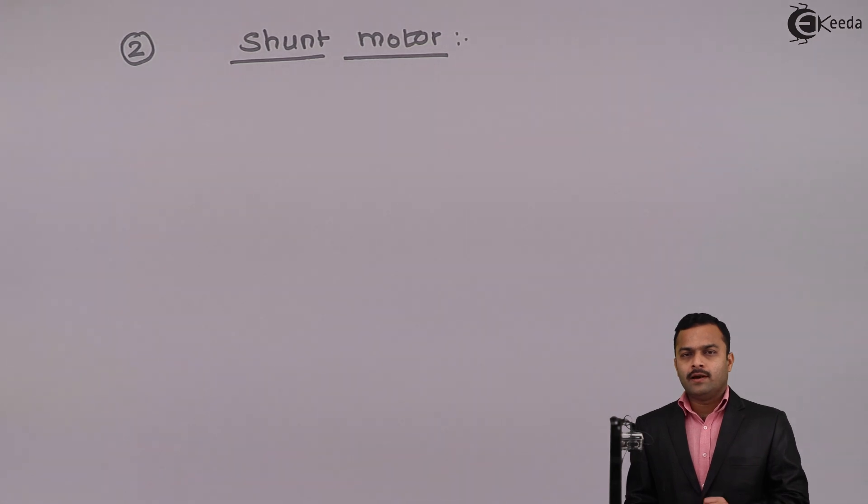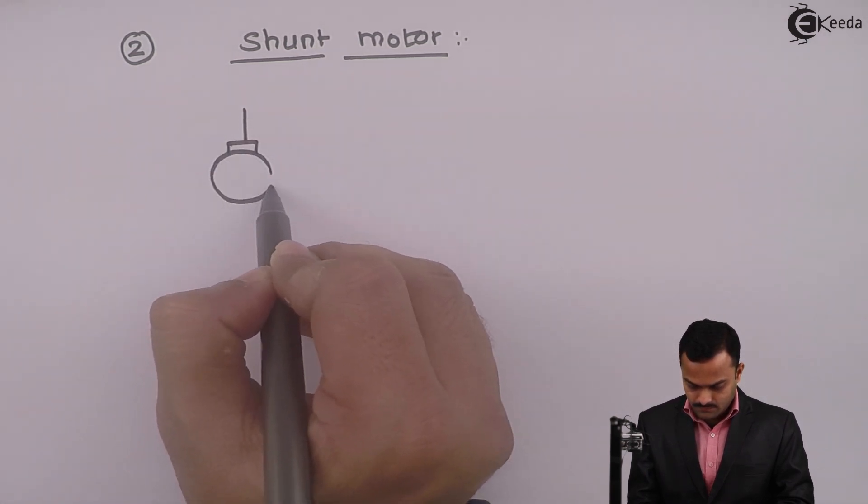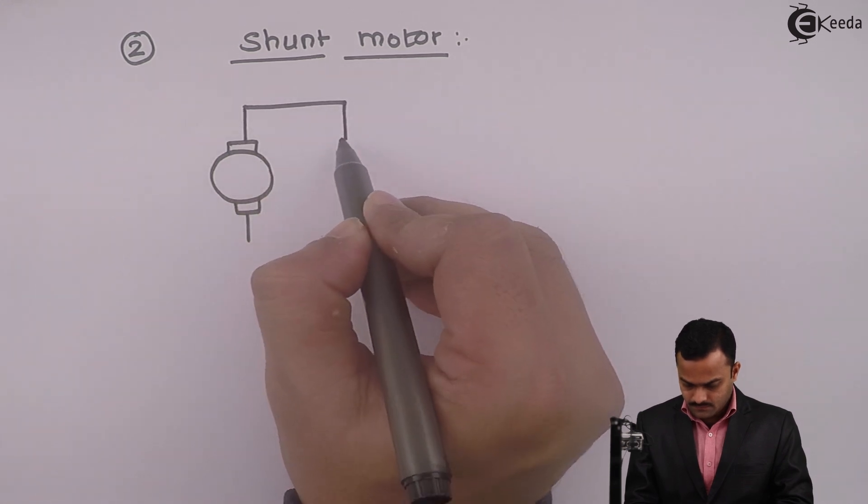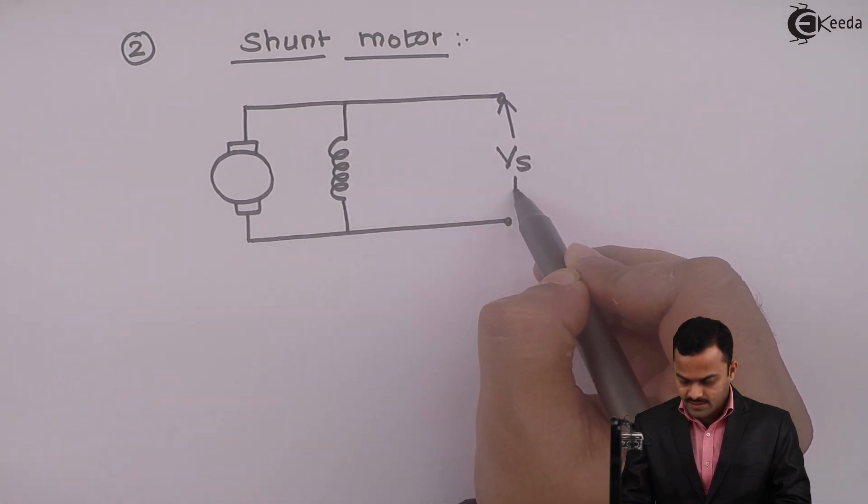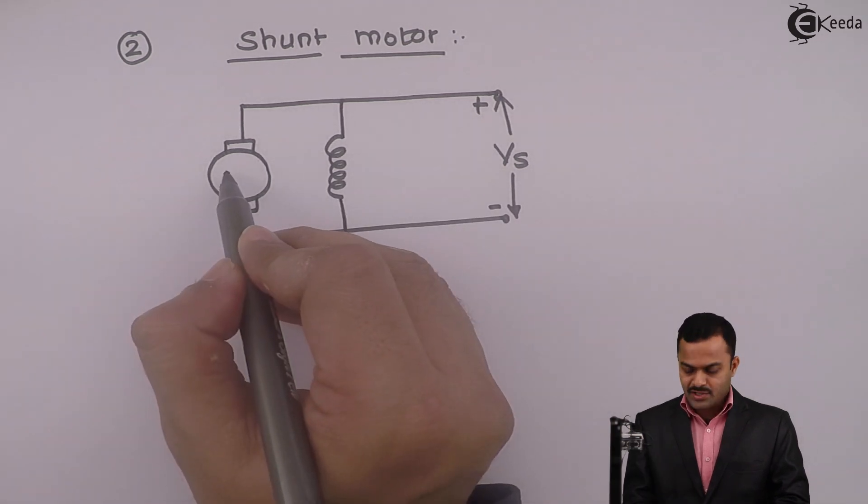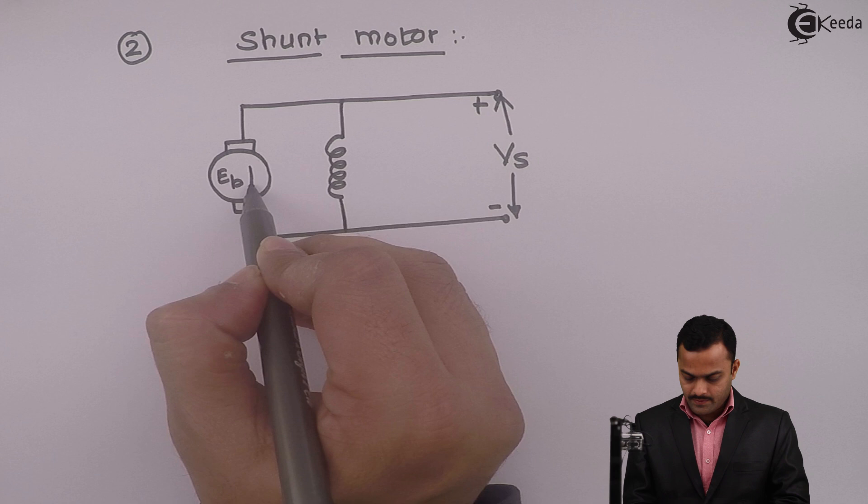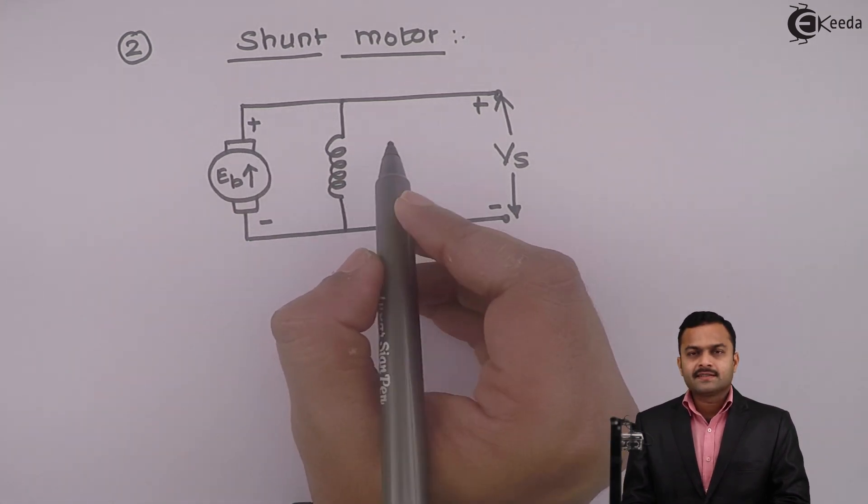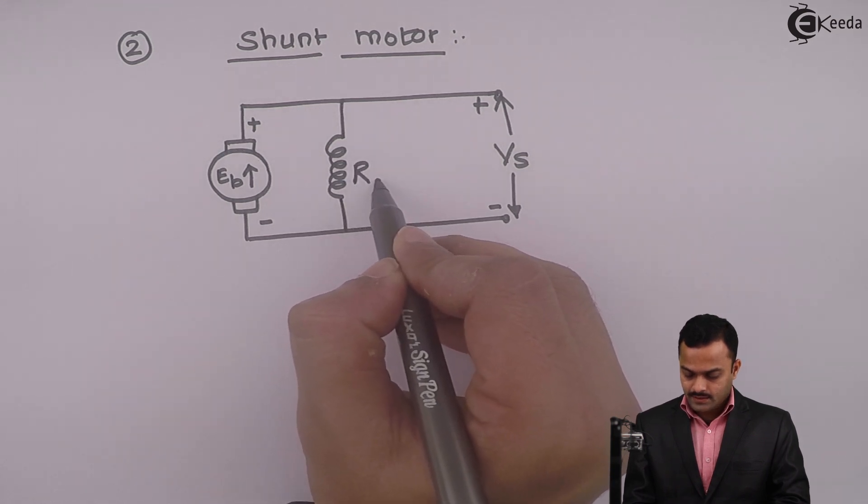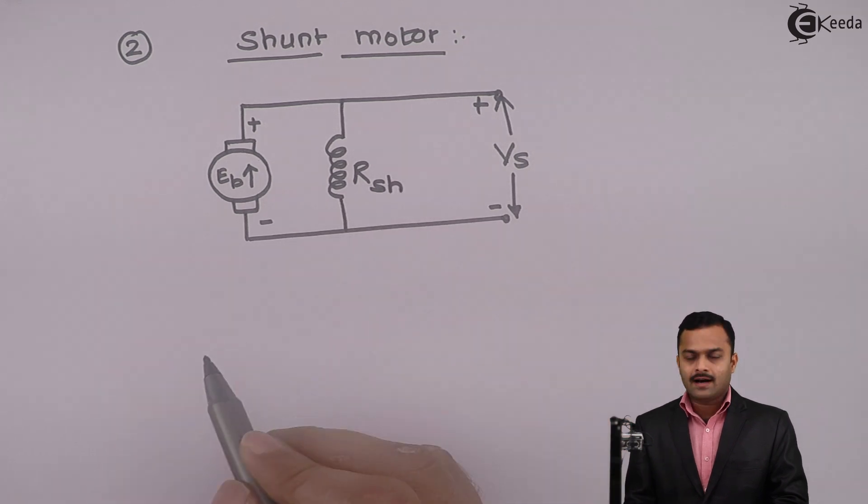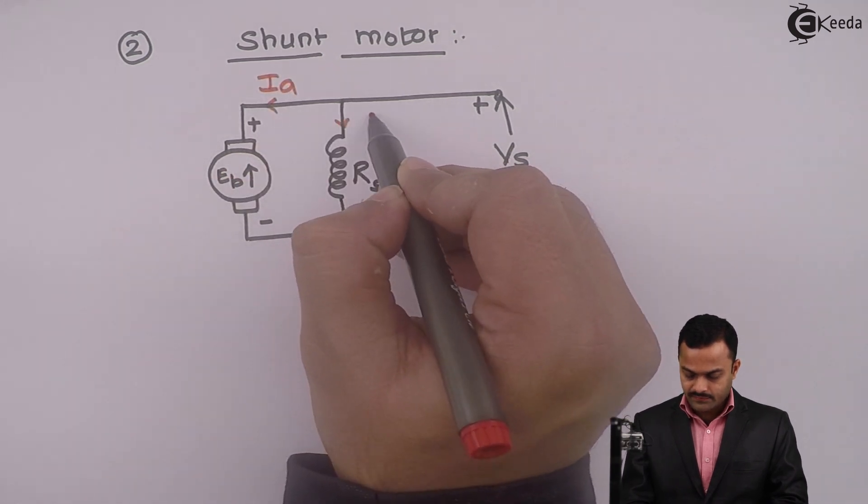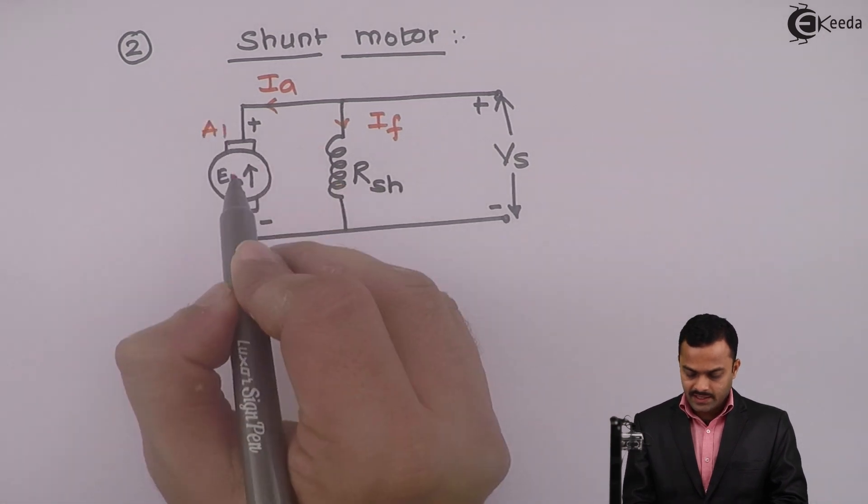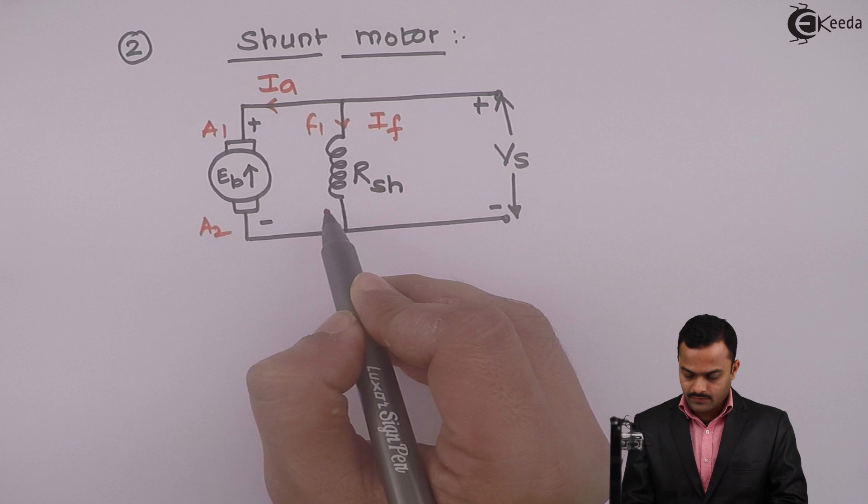In shunt motor the field winding is in parallel with armature. This is supply voltage Vs. This is the armature which will produce a back EMF of this polarity, and this is the resistance of field winding. Since it is connected in shunt we can see the resistance, I will represent it as Rsh. This will be the armature current Ia and this will be the field current If. The armature terminals are A1 A2, field terminals are F1 F2.